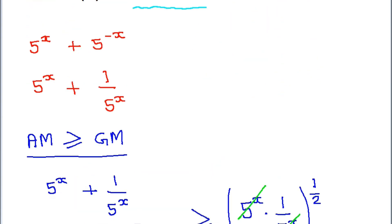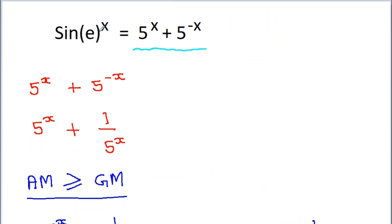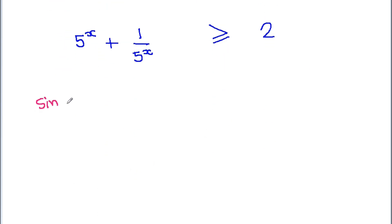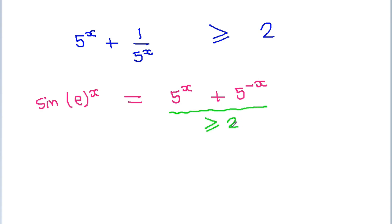Our problem is sin(e^x) = 5^x + 5^(-x). We have established that 5^x + 1/5^x is greater than or equal to 2. However, we know that sin is bounded between -1 and 1. Therefore, we can say that the given equation has no solution.